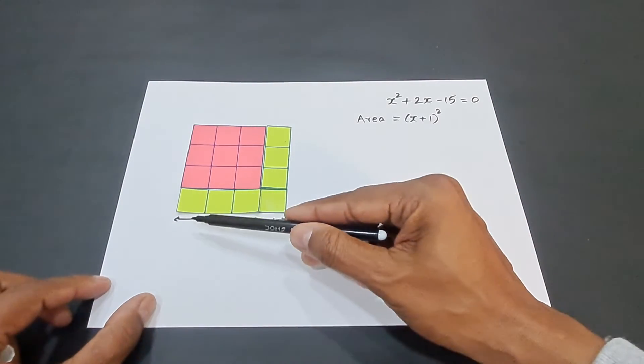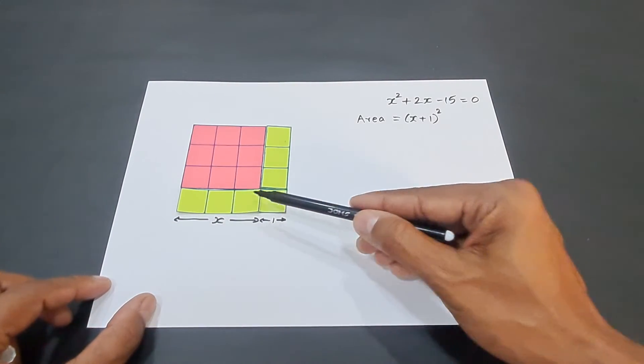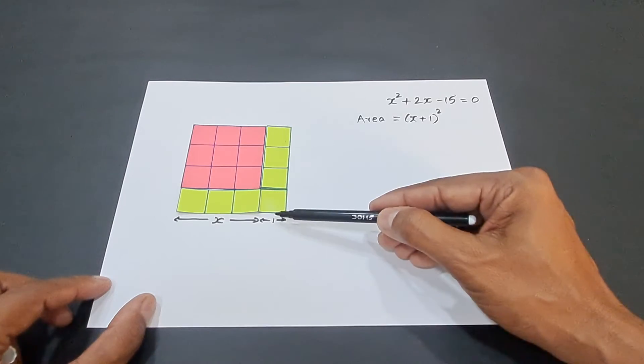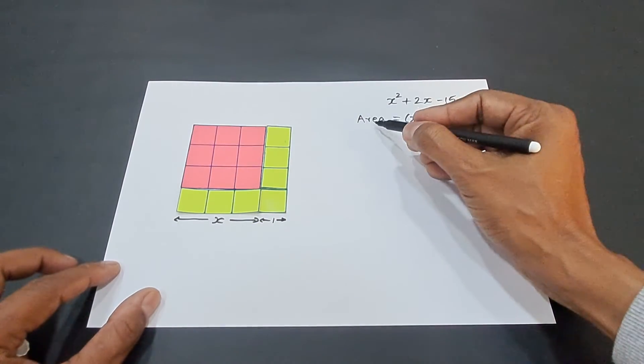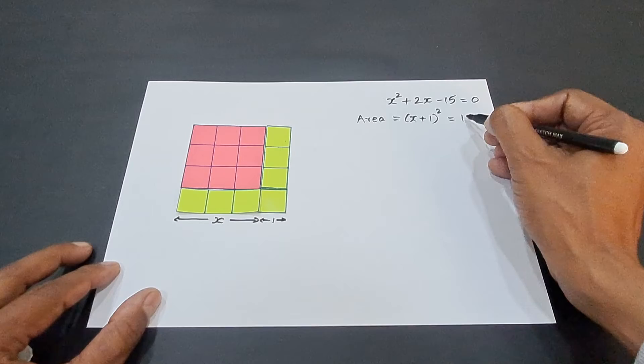Just count the number of squares along the length: 1, 2, 3, 4. 1, 2, 3, 4. So, we have 16 squares here. So, this area is actually equal to 16.